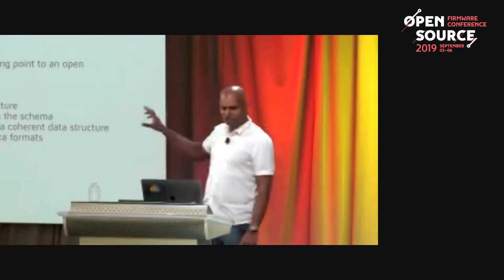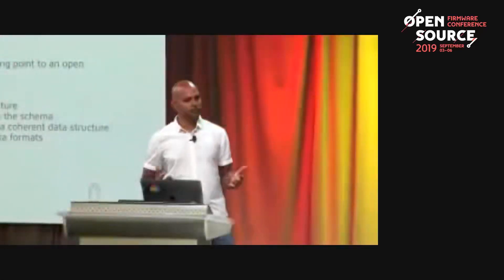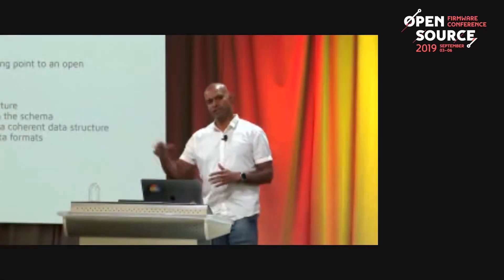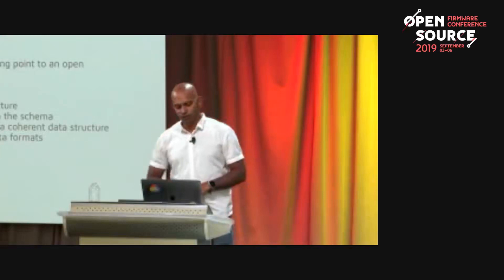Let's talk a bit more about the BDAT structure. I find the structure good — though it's mostly disabled in BIOS and still needs some work we are going through. The main idea: it provides a header in the ACPI and a pointer to somewhere in 64-bit memory where the raw data lives. The raw data contains multiple schemas. Each schema has a standard header which is a GUID, and from the GUID you know what data is behind it. I find this much more flexible.